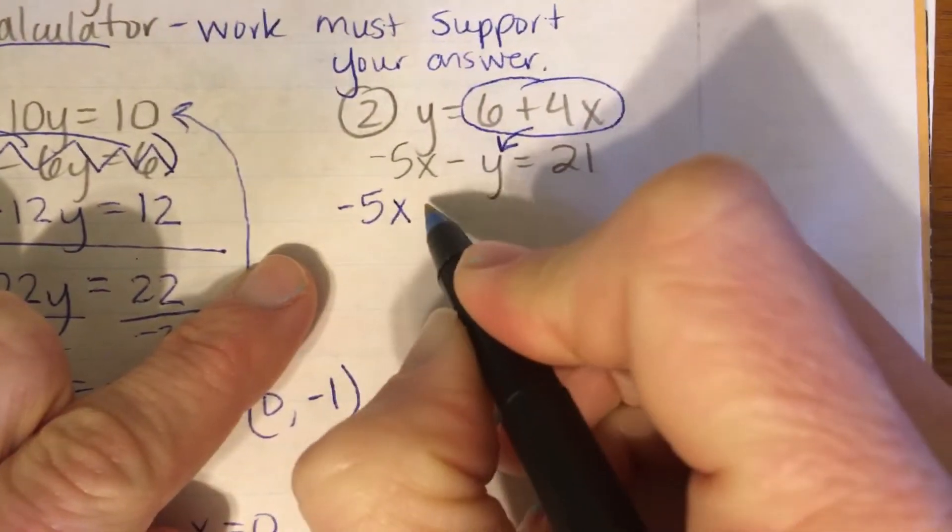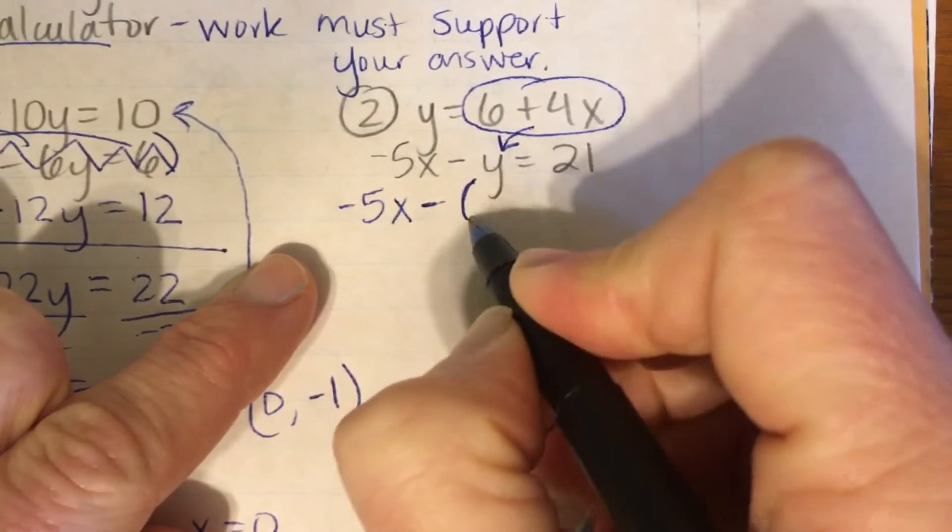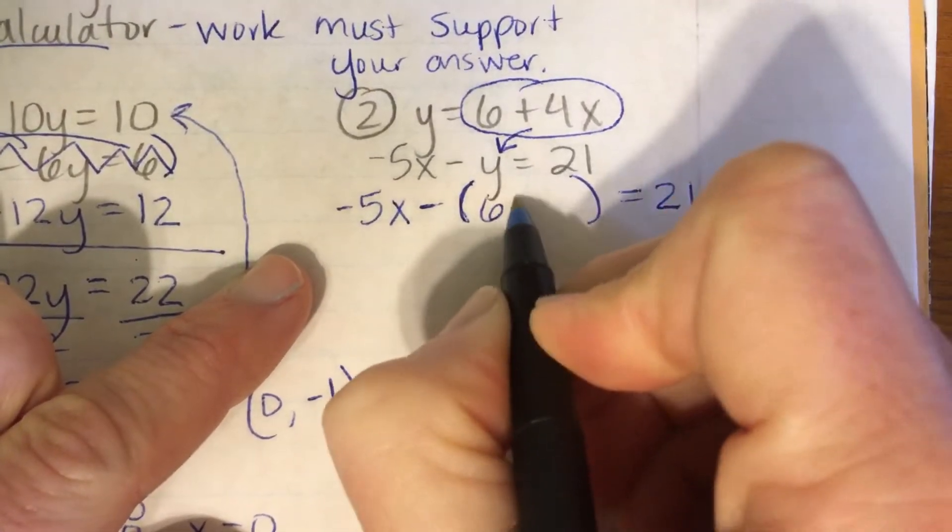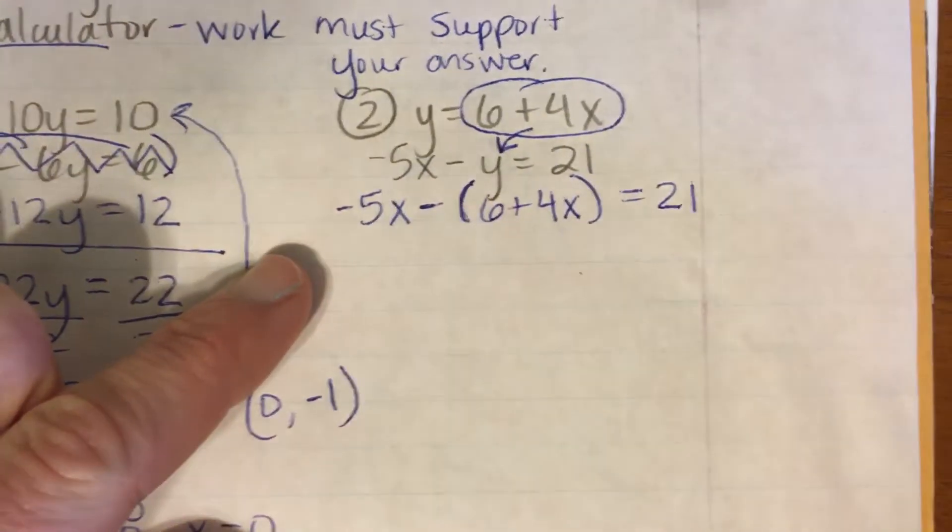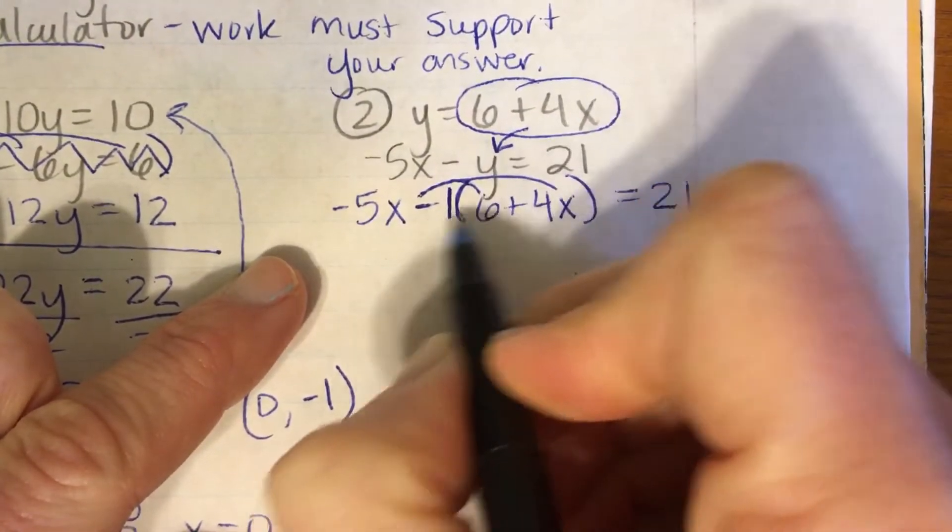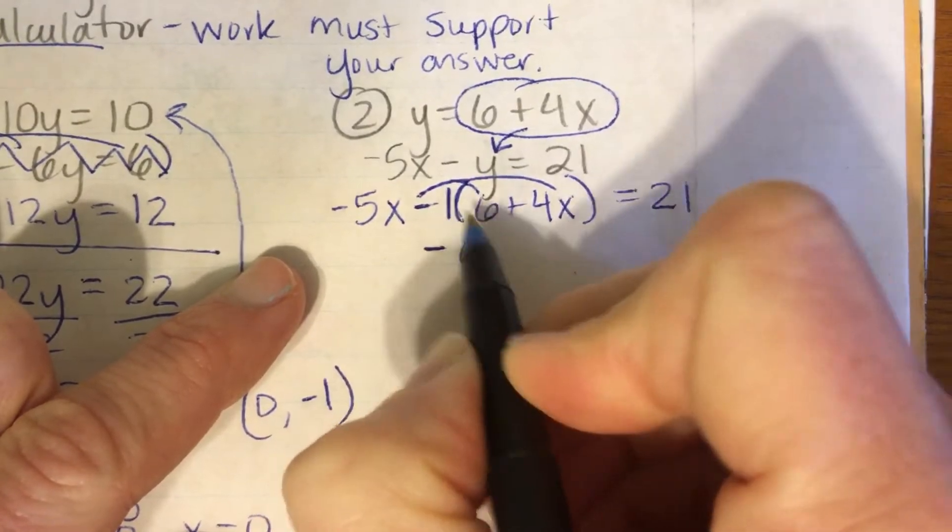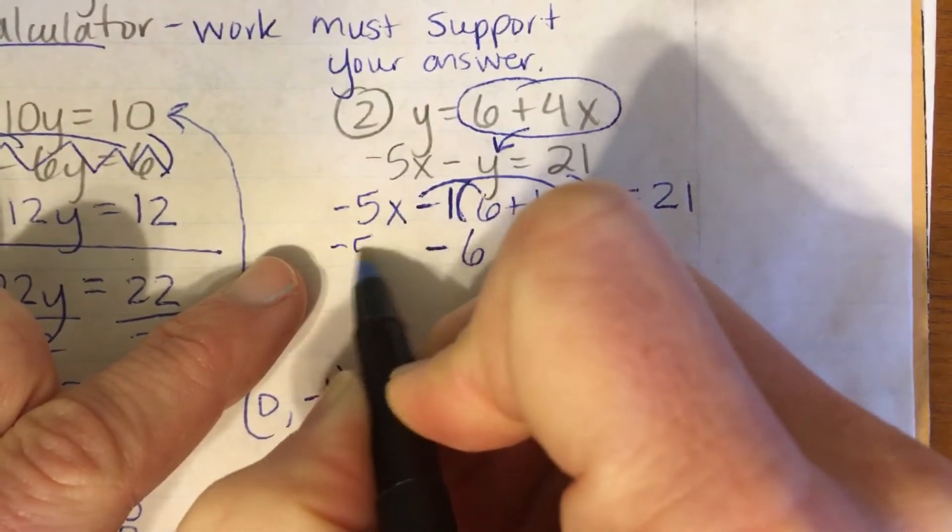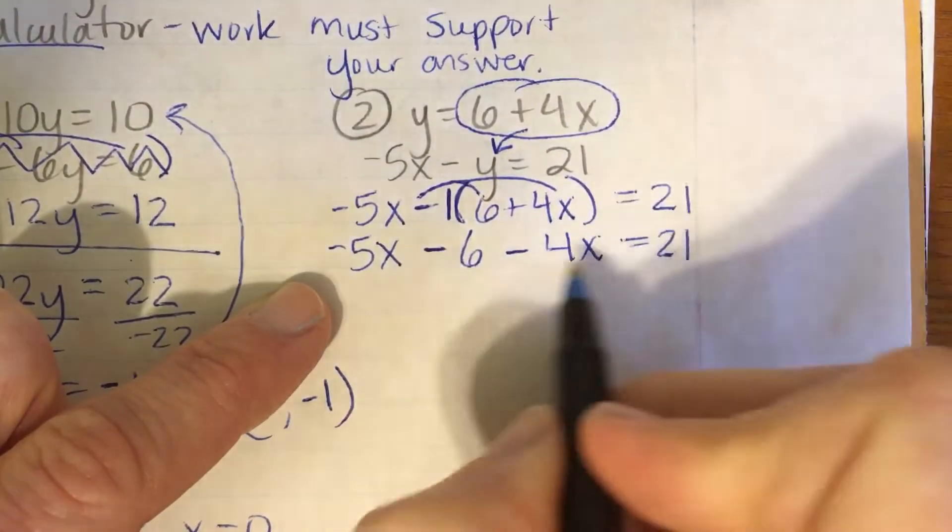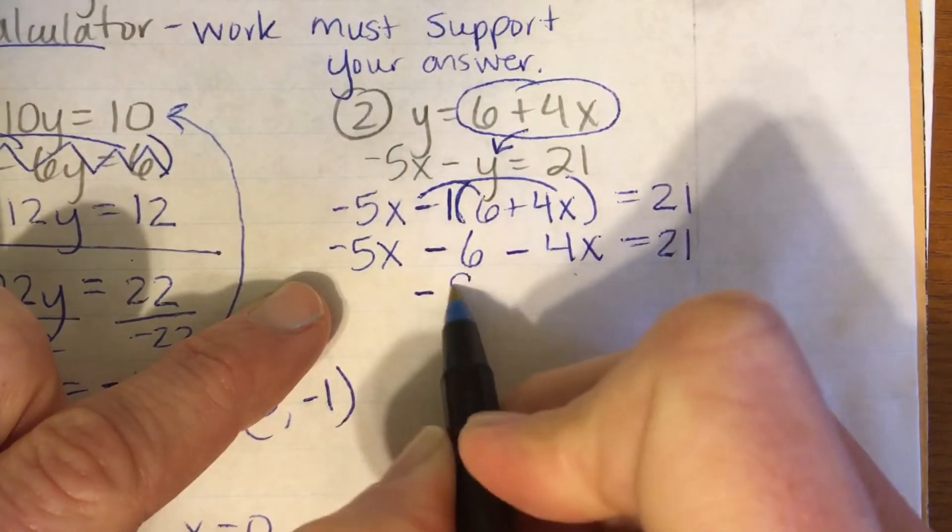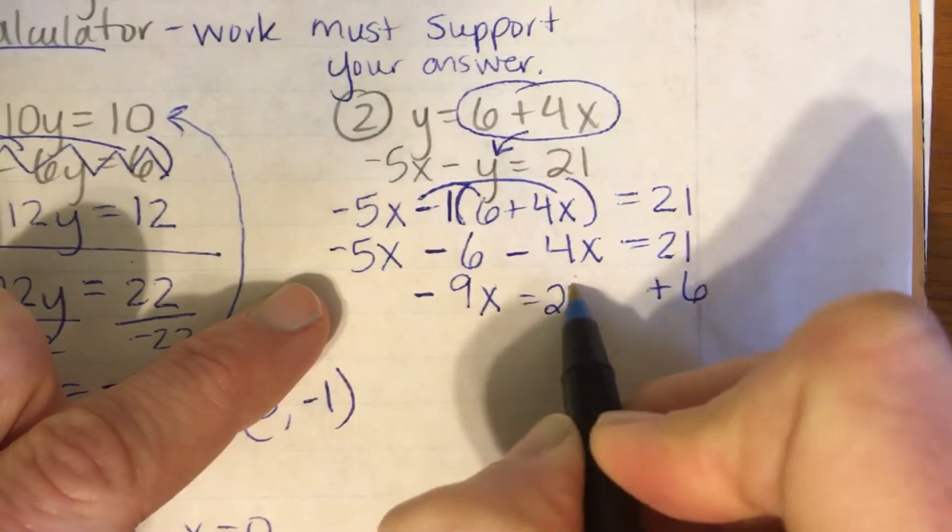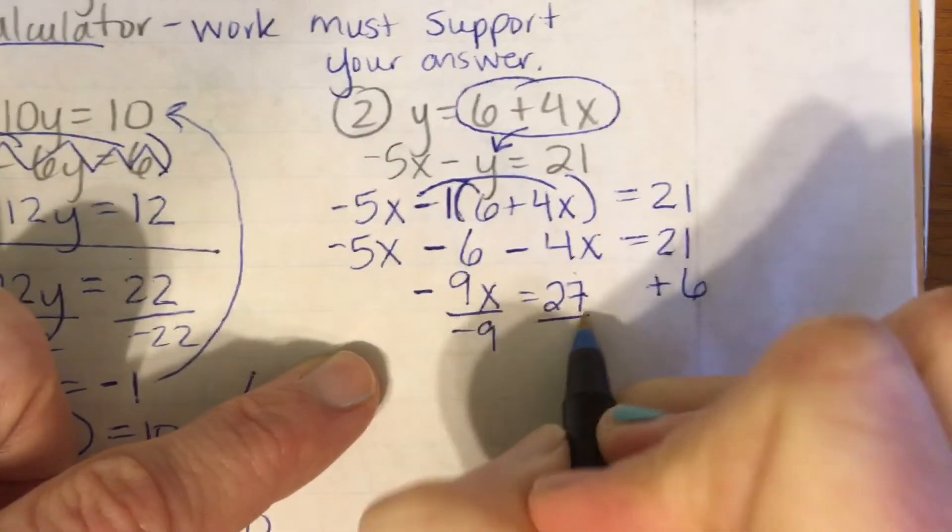So negative 5x minus parentheses equals 21. In the parentheses, I'm putting 6 plus 4x. Alright, there's a 1 right here that I need to distribute a negative 1. So it's going to be negative 6 and negative 4x. And I'm going to drop down the negative 5x equals 21. Alright, combine like terms. Negative 5x, negative 4x is negative 9x. And then I'm going to move the 6 over and add it, which gives you 27.